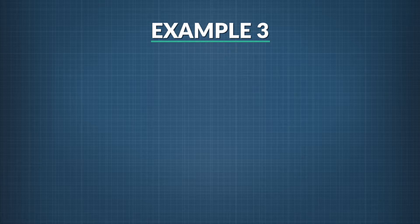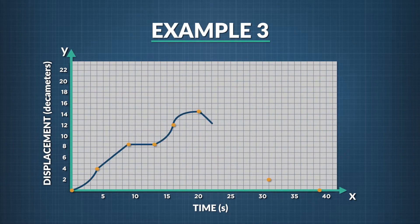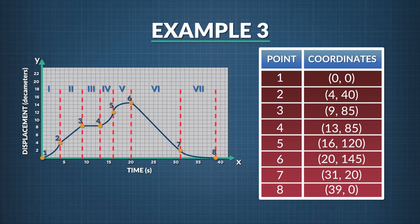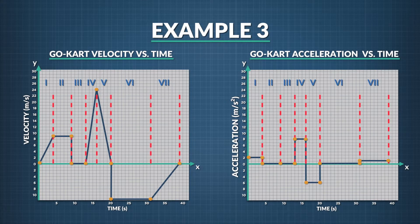In the last example, a go-cart traveled in a loop while its displacement over time was recorded. For each of the points marked on the graph, the time and displacement are given in the table shown. Using this data and the graph, draw a velocity versus time graph and an acceleration versus time graph for the go-cart. Take a minute, press pause, and try it for yourself. Did you draw graphs that look like this? If not, let's go over how we've created these graphs.